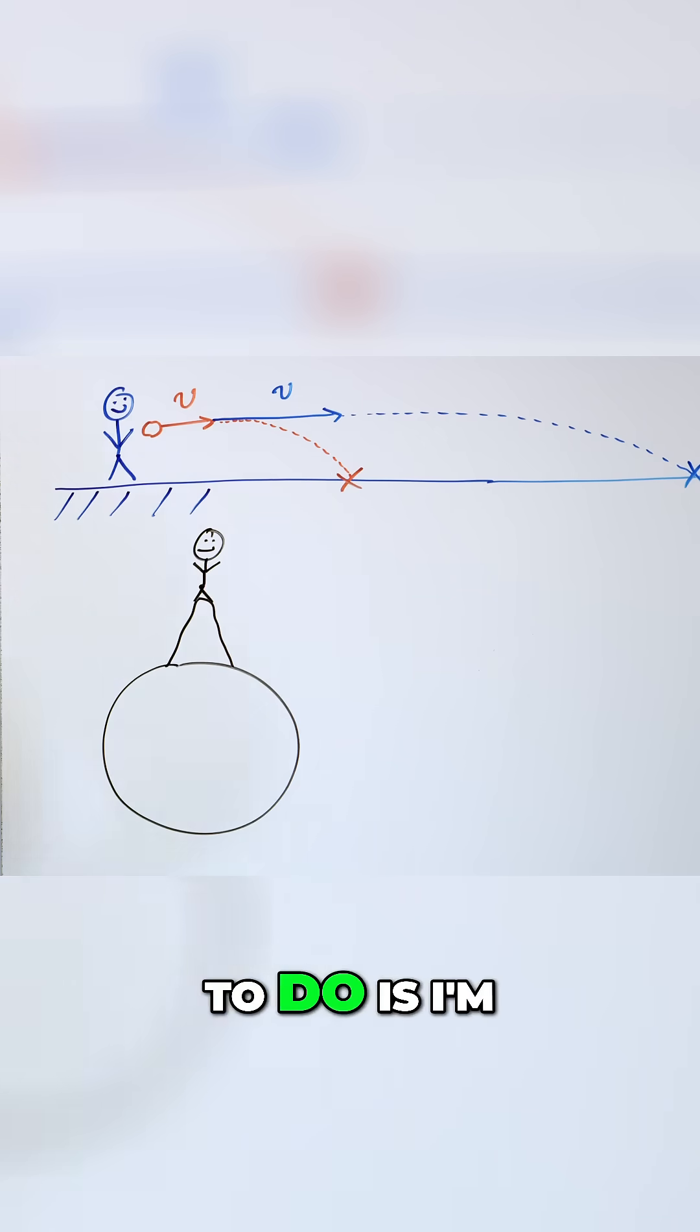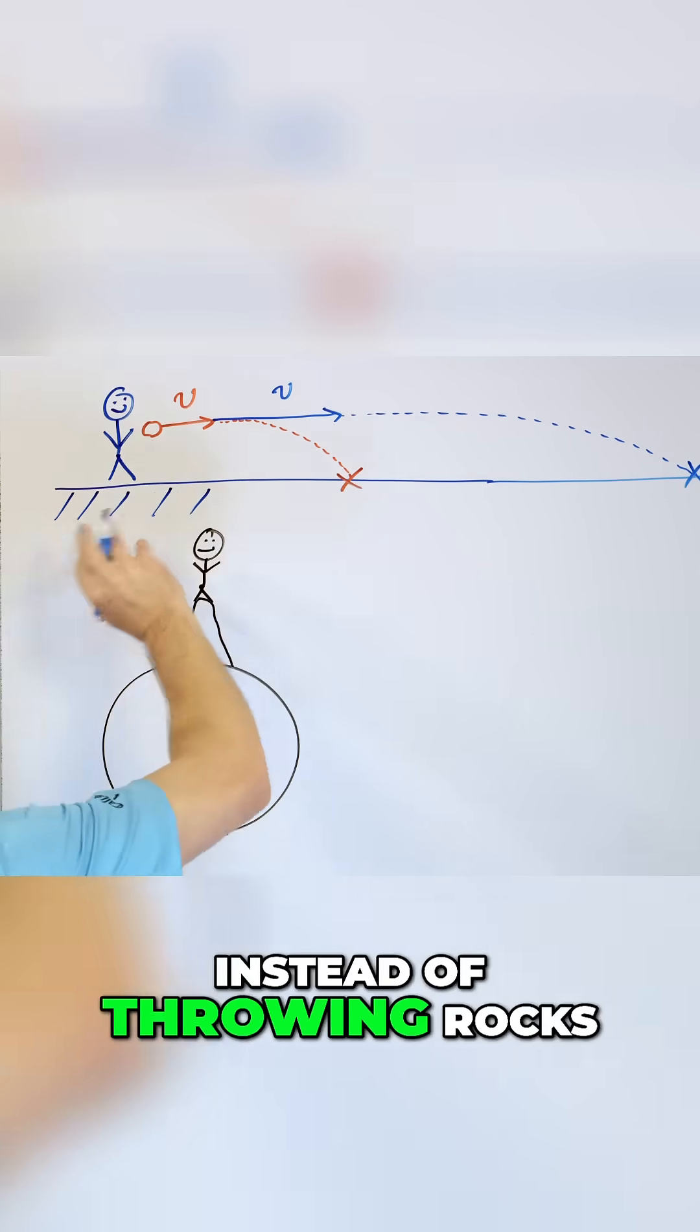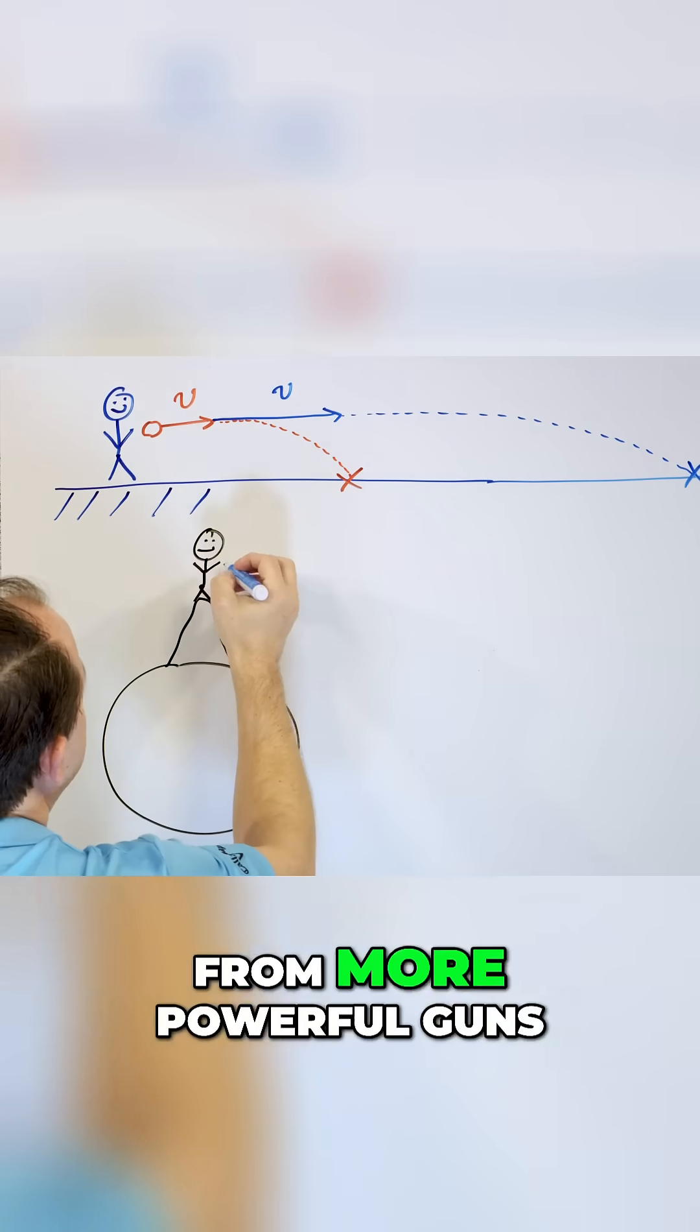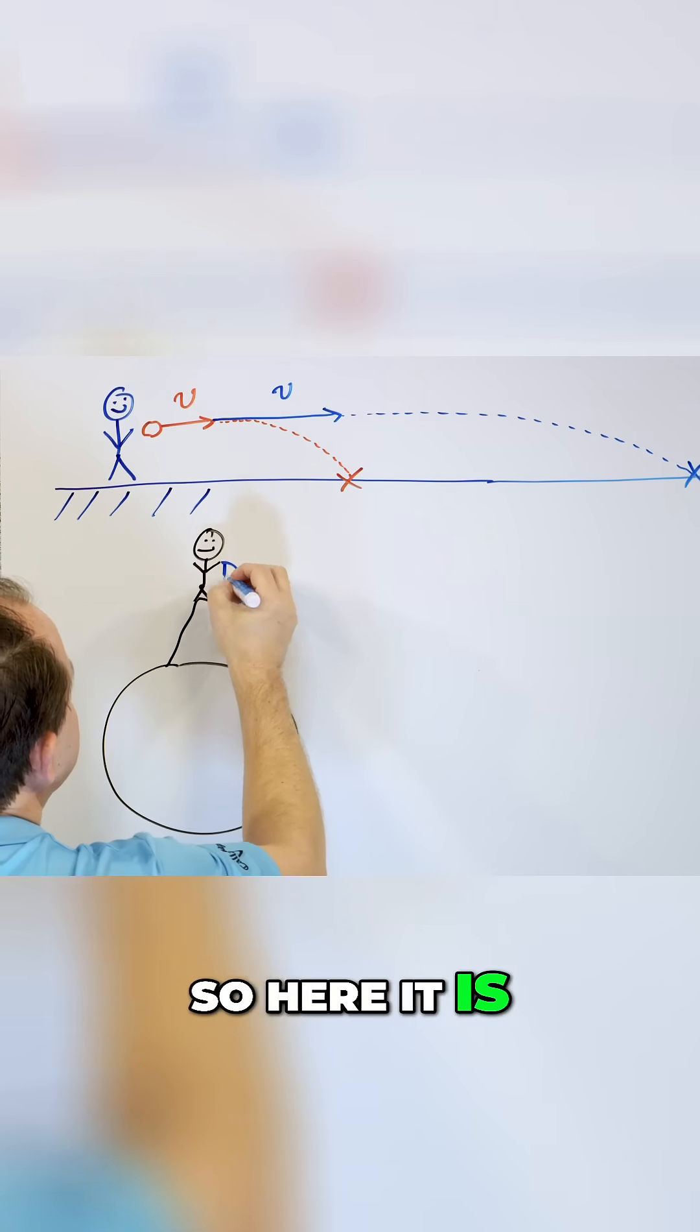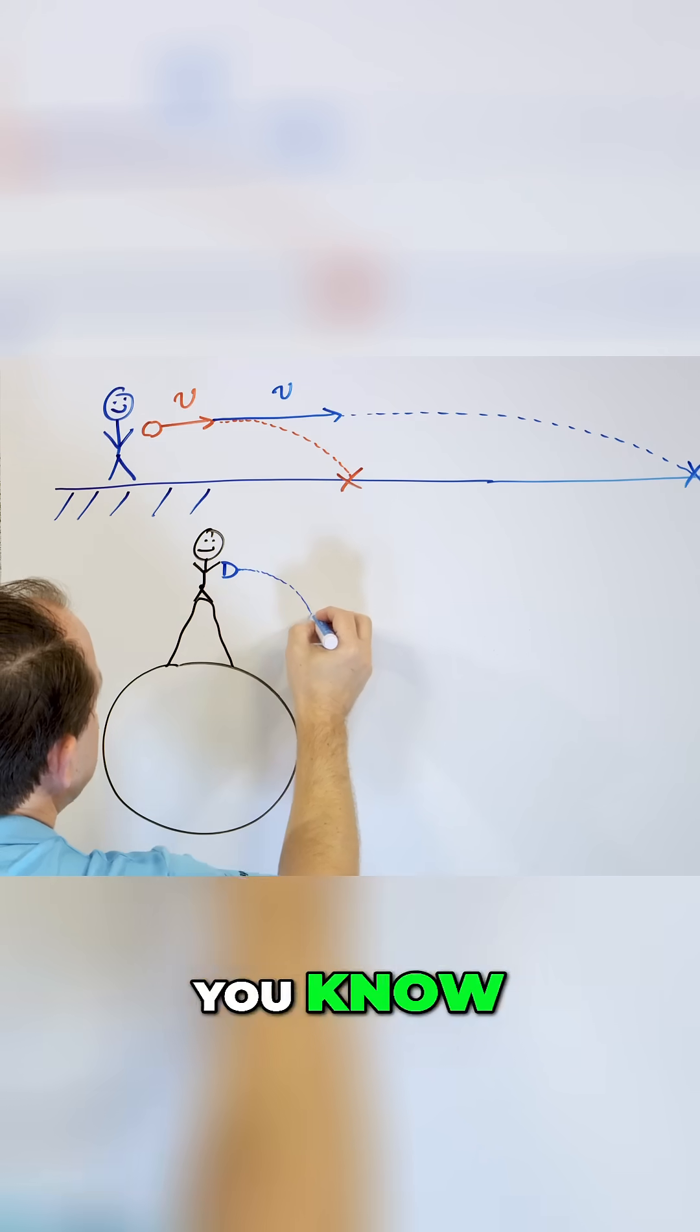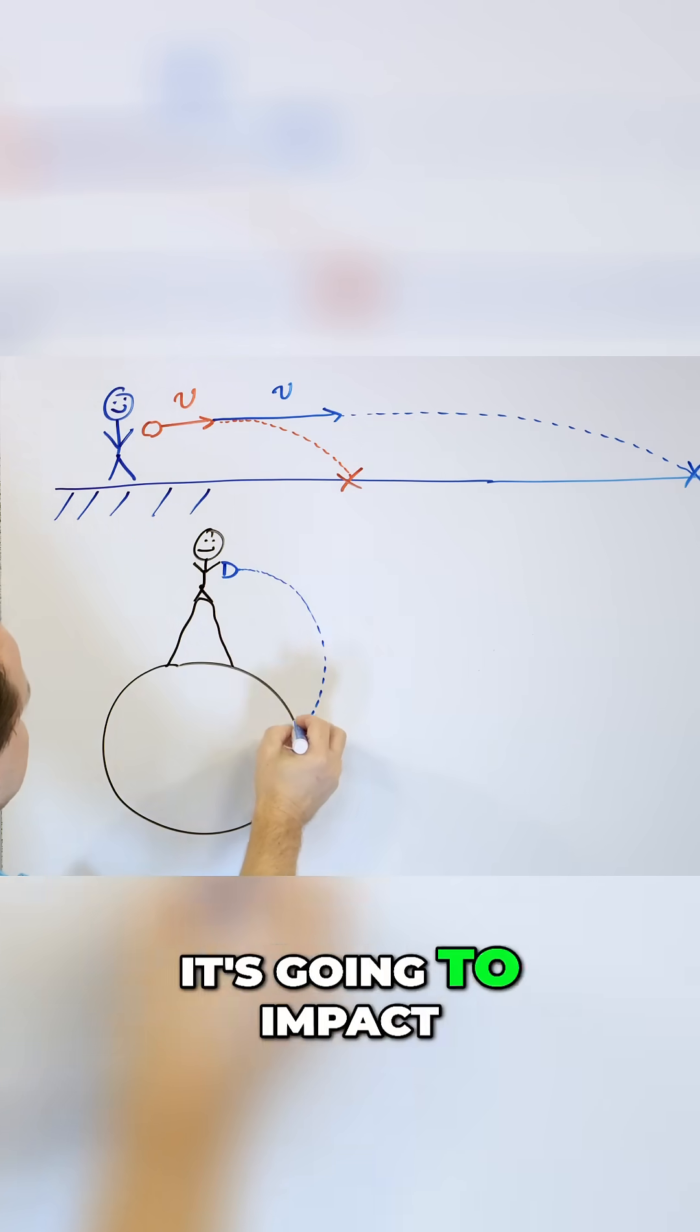And what I'm going to do is, instead of throwing rocks, I'm gonna fire bullets horizontally from more powerful guns. So here it is. And the first one is gonna go very far, but eventually the Earth is going to pull it down. It's gonna impact right here.